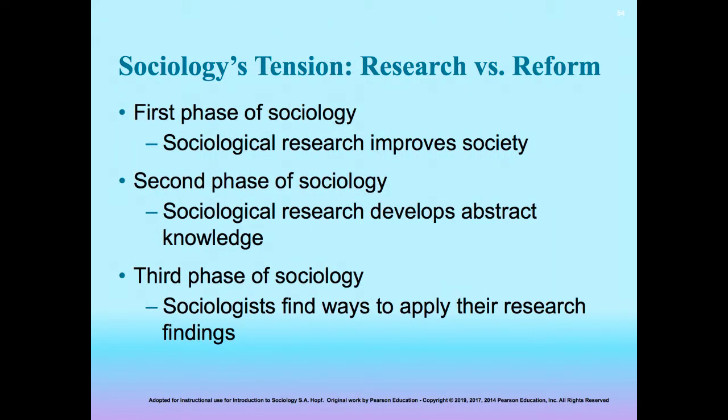As we put some closure on this chapter, I want to summarize by discussing the historical tension within the field of contemporary studies. Sociology first emerged in the early 1900s as a way to improve society, and then it later became more focused on developing abstract knowledge — that would be the second phase. Finally, in the third phase, which we're in now, sociology tends to have a more applied focus. Sociologists seek ways to apply their findings, and often college graduate studies will emphasize one or the other of those areas.